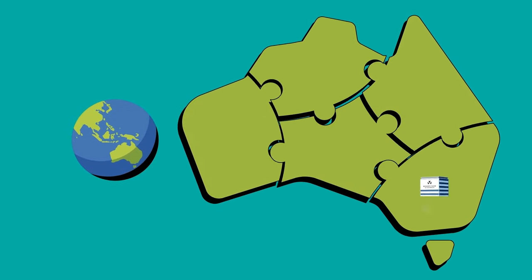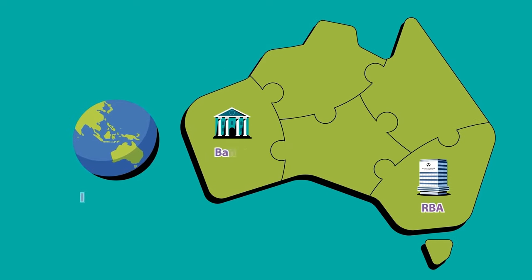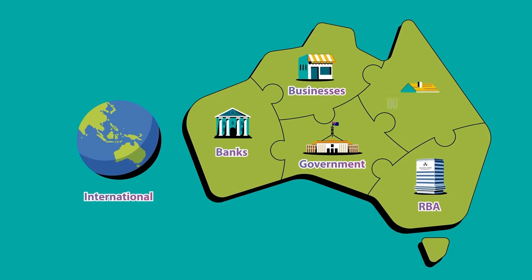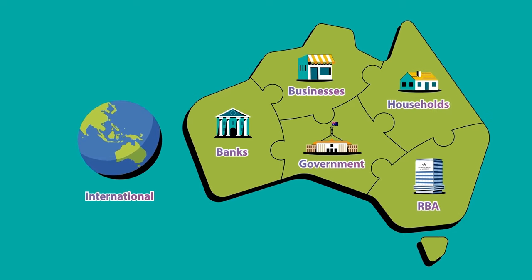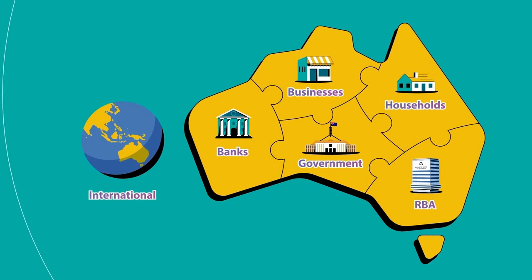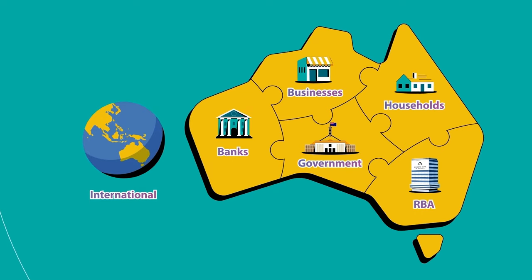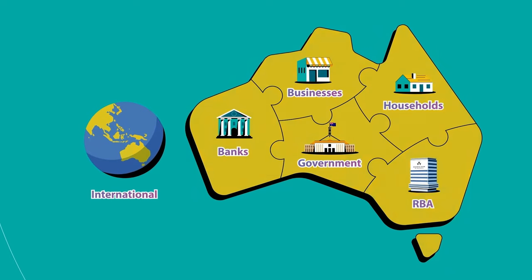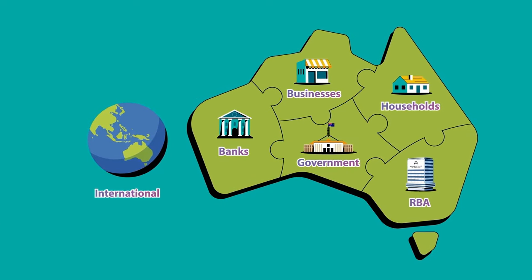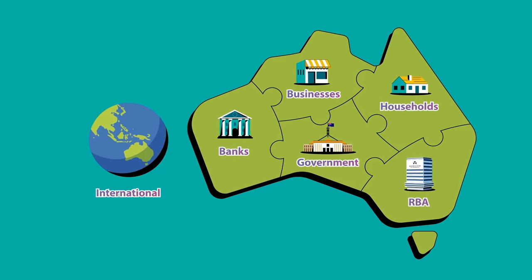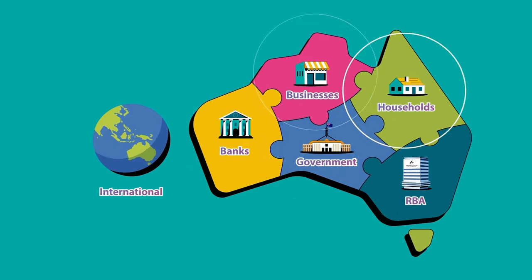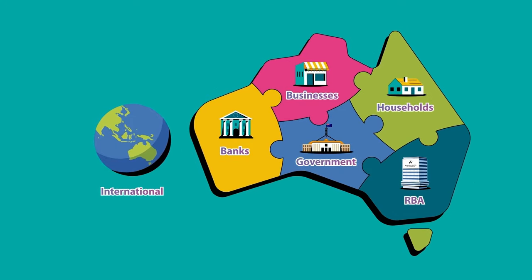Let's think about Australia's economy. All the parts of our economy are linked, a bit like a jigsaw puzzle. A decision made in one part of the economy affects the other parts. So, what are the parts of our economy? In reality, the economy is complex, so we sometimes simplify it into main parts or sectors.